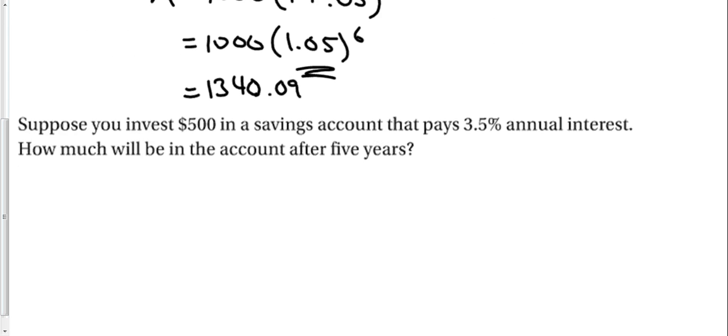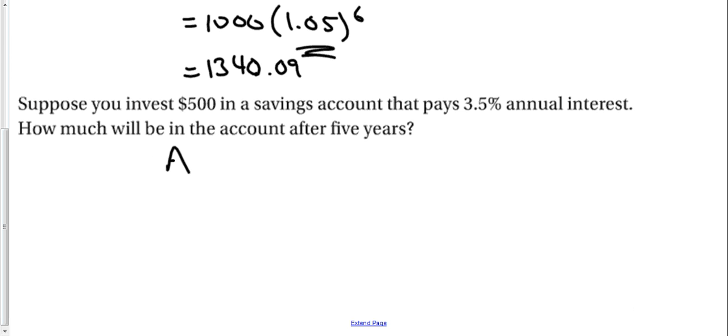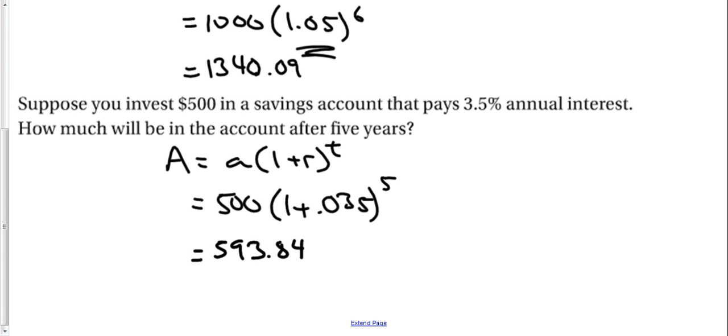Next, same formula, a(1 plus r) to the t power. Plug in the numbers: 500 times (1 plus 0.035) to the fifth power. Simplify this: 500 times 1.035 to the fifth gives us 593.84.